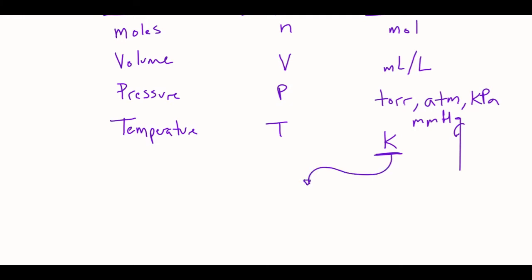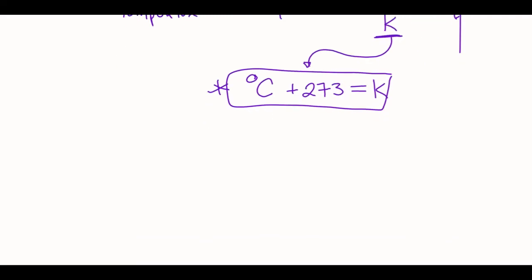So this is going to be your first equation of many today. So if you get something in degrees Celsius, you always have to add 273 to it to get Kelvin. So in all the questions when it gives you Celsius, automatically got to go to Kelvin. So keep that chart handy when you're doing these questions, because we're going to be labeling things with all those different letters later.